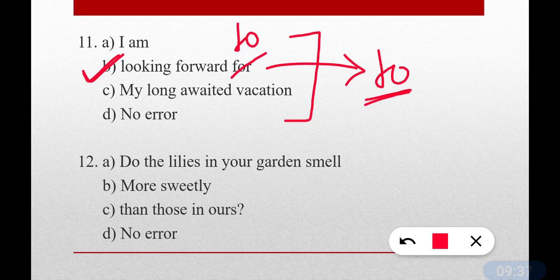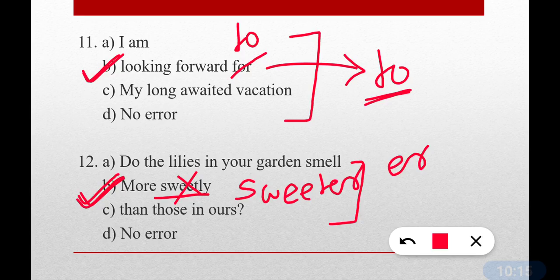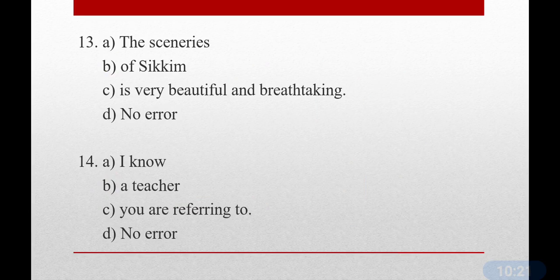Question number twelve: 'Do the lilies in your garden smell more sweetly than those in ours?' Option B contains the error. 'More sweetly' is wrong — when making a comparison, we use the comparative degree, so it should be 'sweeter'. Correct sentence: Do the lilies in your garden smell sweeter than those in ours?